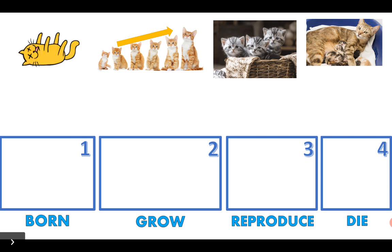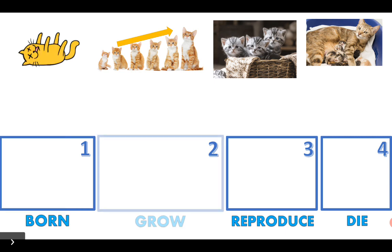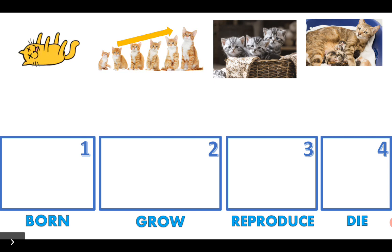Now we're going to remember the stages of life! We have four boxes — one, two, three, and four — and they belong to: born, grow, reproduce, and die. Can you repeat after me, please? Born... grow... reproduce... and die. Good job!